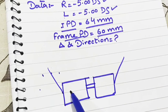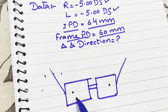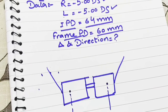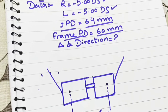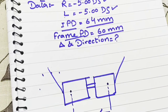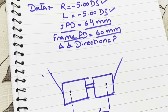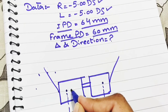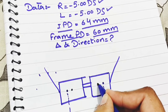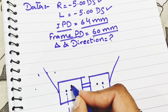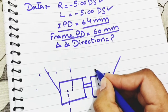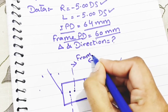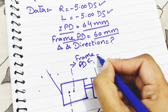As we know, IPD — interpupillary distance — is more than frame PD — frame pupillary distance. The IPD is 64 mm, while the frame PD is smaller than the IPD at 60 millimeters. So frame pupillary distance is smaller than IPD.